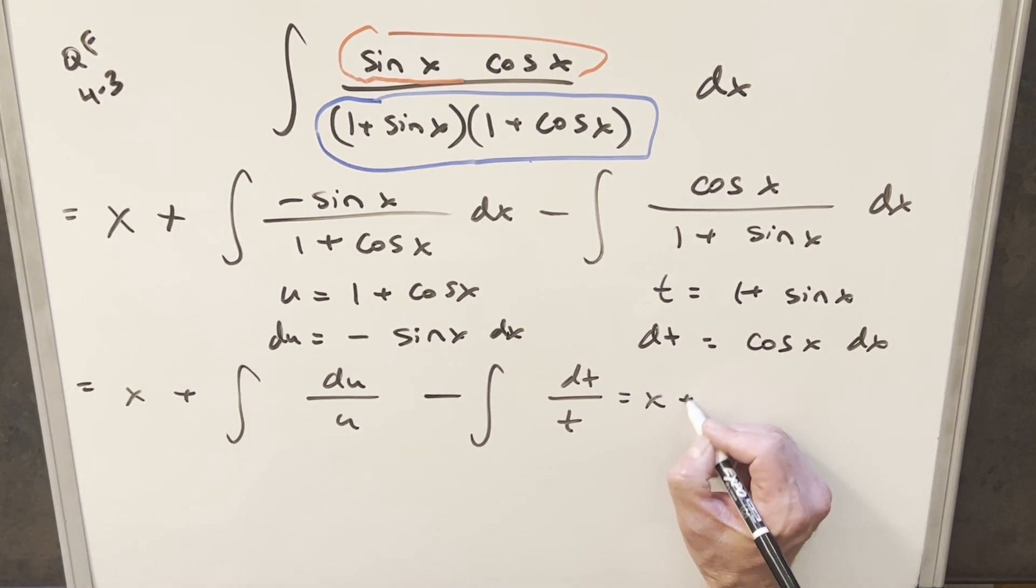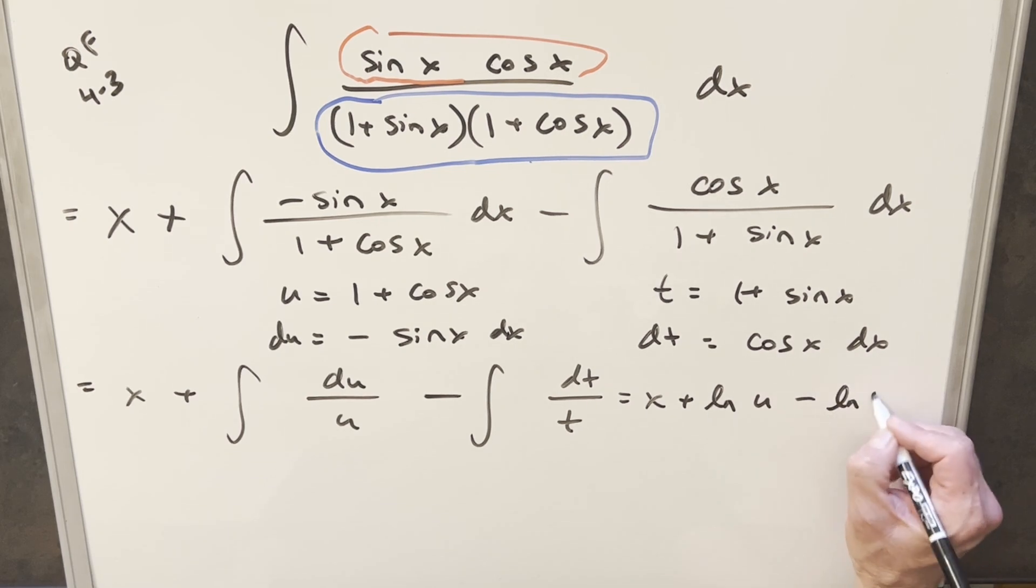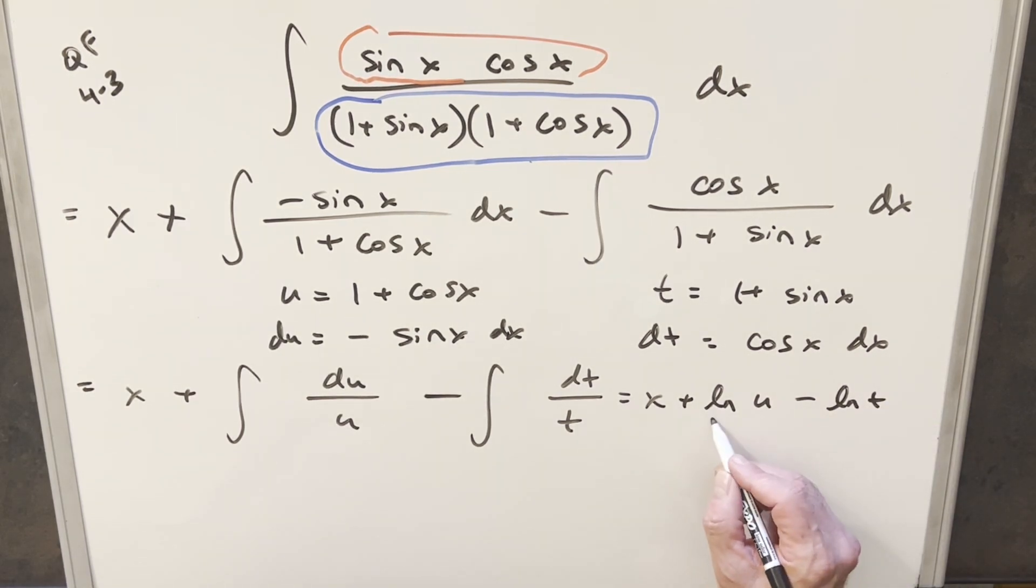Doing this, what's going to happen is we're going to get x plus natural log of u minus natural log of t. So I just need to back-substitute in order to finish this off. But one thing I can do is combine these and write this as a fraction. Write this as natural log u over t.